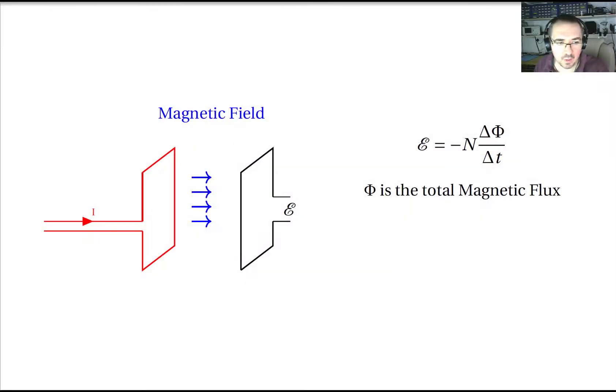So phi is our measure of total magnetic flux and the unit for phi is called the Weber, and the Weber has an interesting definition because it's defined as the change in magnetic flux that will be required in one second to get one volt.